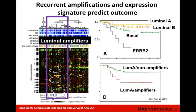Many researchers have observed that integration of different data types can increase our power to develop robust biomarkers. For example, the luminal A subtype defined by gene expression profiles was split into two subsets — one with a large number of high copy gains in the genome and one without. These two subsets of luminal A patients also had significantly different survival experiences, illustrating how combining genomic and expression data improves biomarker power.